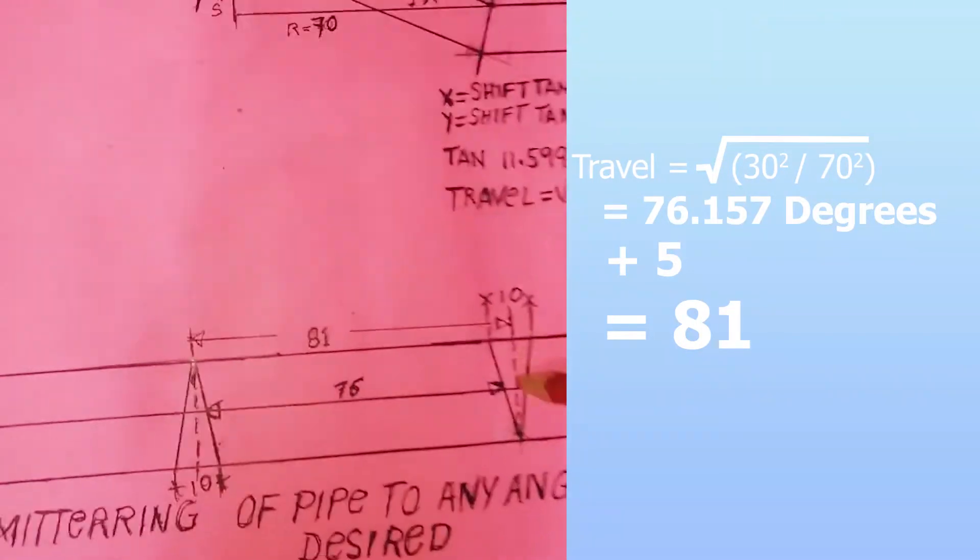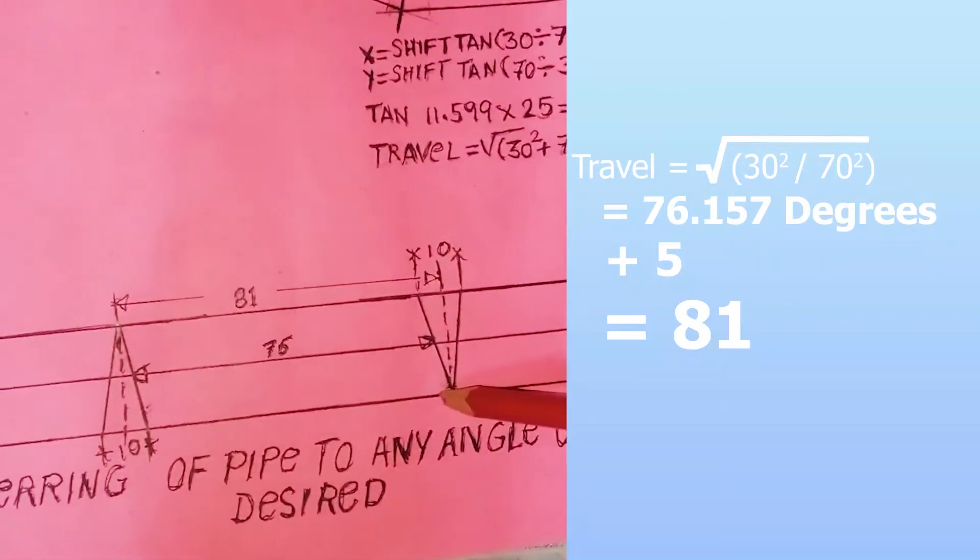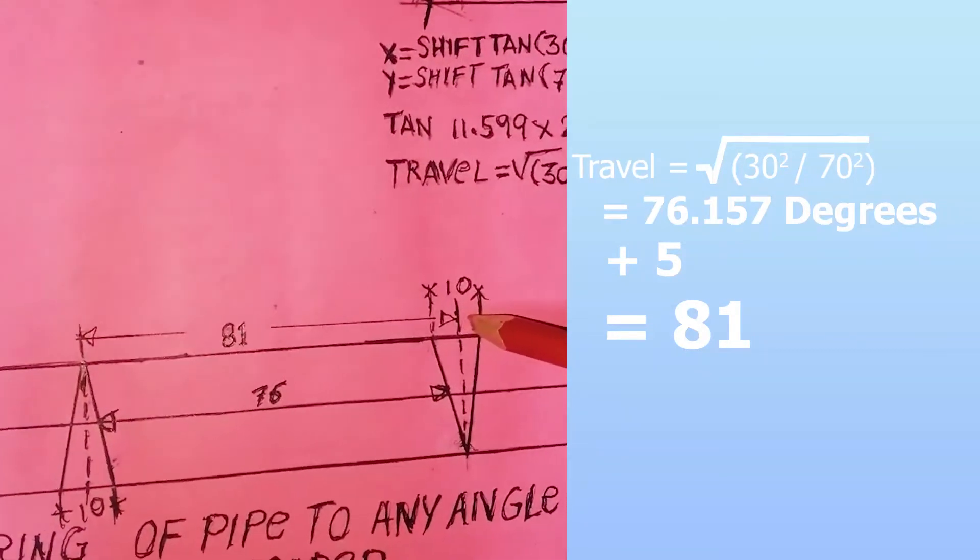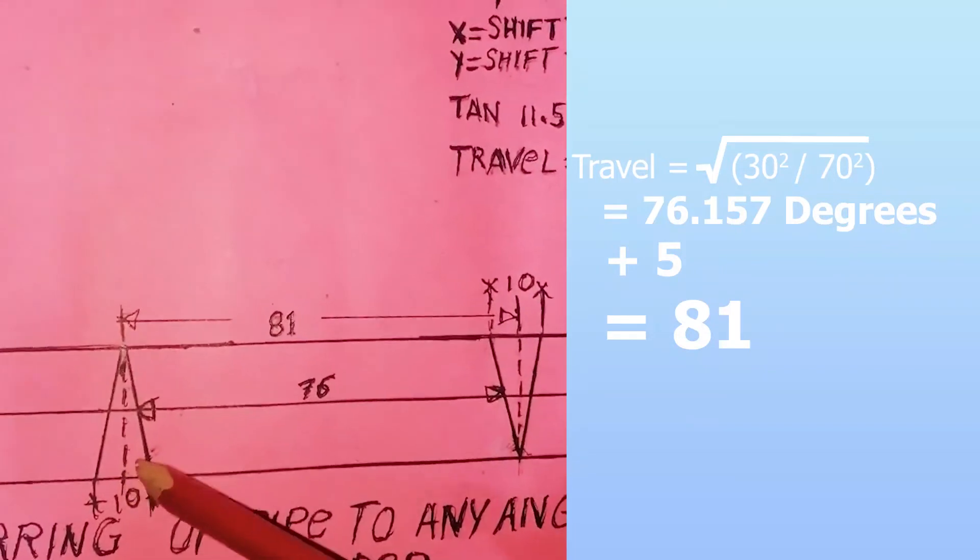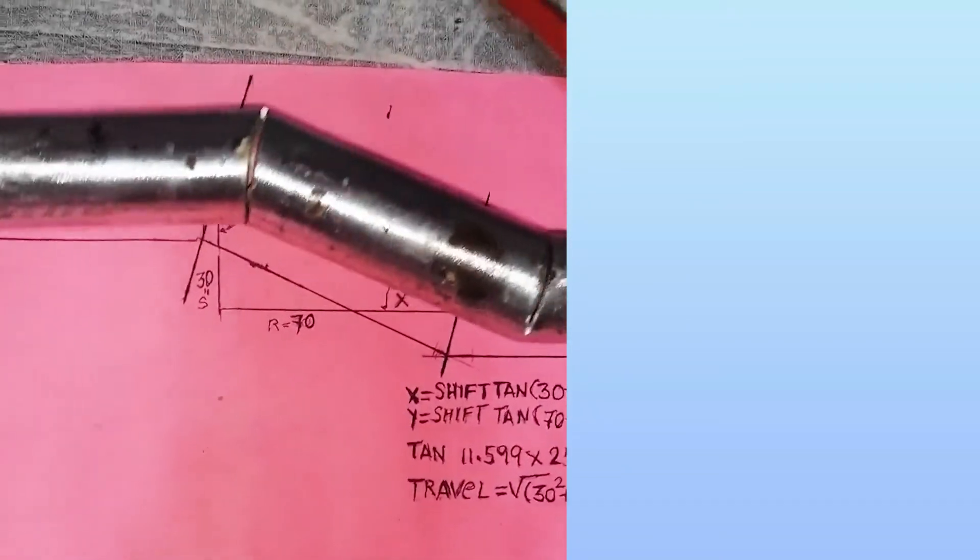Pagmula sa 81 na yun, guguitan mo na wrap around, tapos minus 5 dito sa kabilang side, 5 tsaka 5 dito, bali 10 sa kabila, ganun din. Pag binali mo na, ito yung kalalabasan niya.